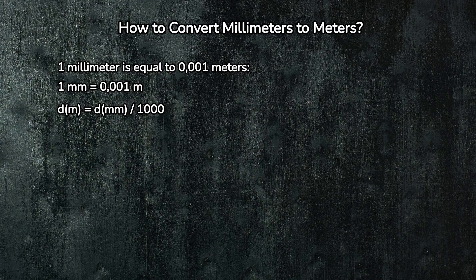Imagine you have a long piece of string that is exactly one meter long. If you cut that string into one thousand equal pieces, each piece would be one millimeter long. So, to convert millimeters to meters, you simply divide by one thousand.